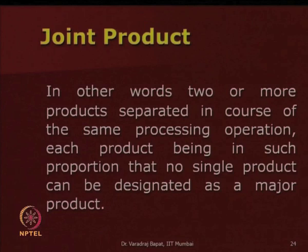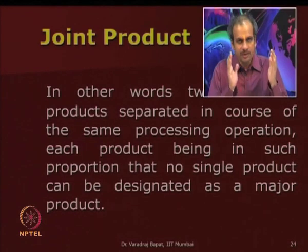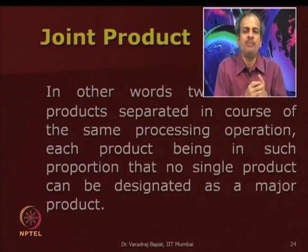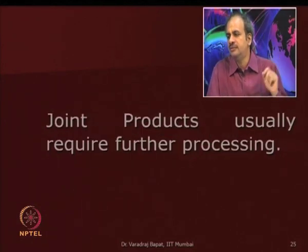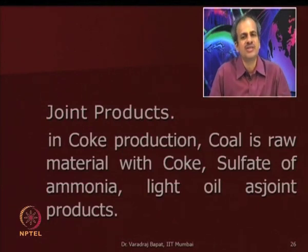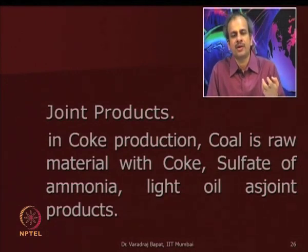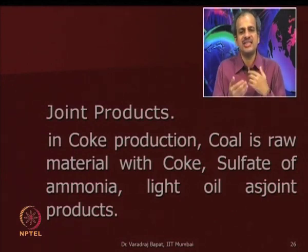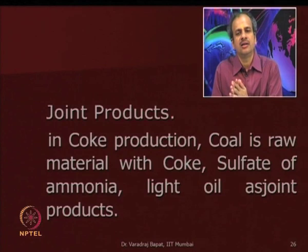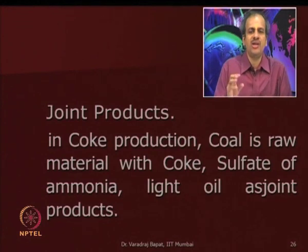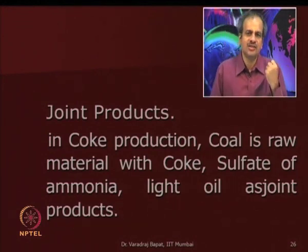When one or more products are separated in the course of the same processing operation and many products are equally important, it is considered a joint product process. They will generally require further processing. Another example is coke production, where coal is the raw material. Not just coke, but sulphate of ammonia and light oil also emerge from the same process. So coke, sulphate of ammonia, and light oil are all considered joint products.